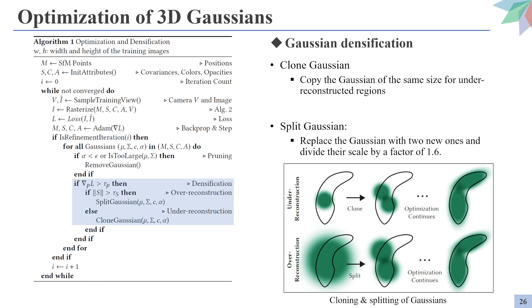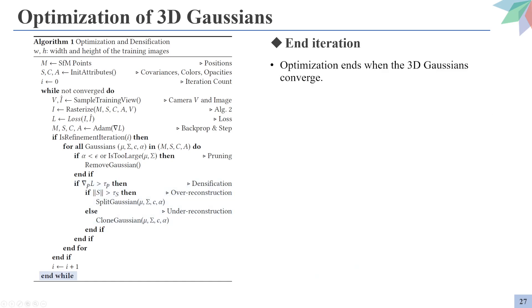And on the other hand, if the covariance of the Gaussians is smaller than the threshold, the area is declared under-reconstructed, and the Gaussian is cloned to fill in the space. The optimization process is terminated when the 3D Gaussians converge to a local minima.